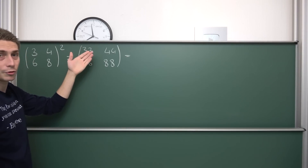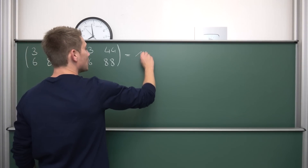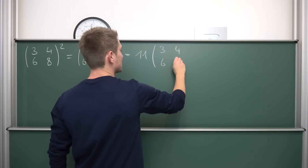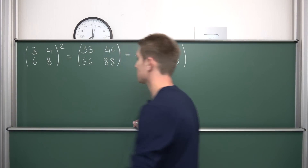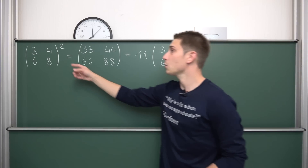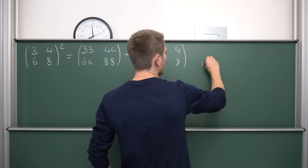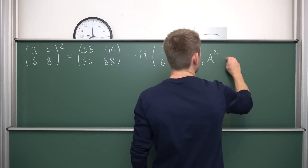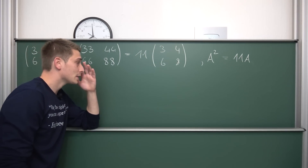I mean, 3 times 11 is 33, 4 times 11 is 44, and so on. So we are multiplying with a scalar of 11, and this right here is just our matrix that we had initially. This is a nice little rewriting you can do at first, and this makes it kind of more beautiful because what we have is: we are going to raise a matrix A to a power of 2 and get 11 times the matrix A.